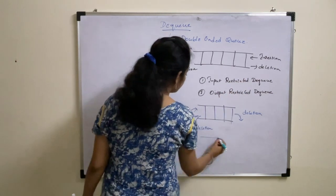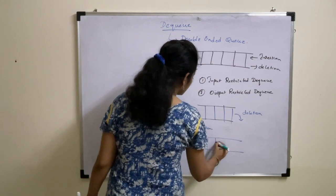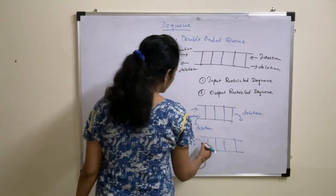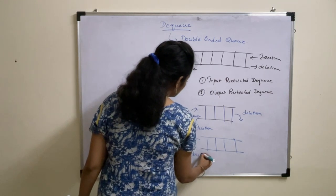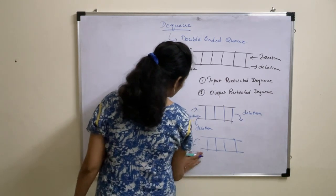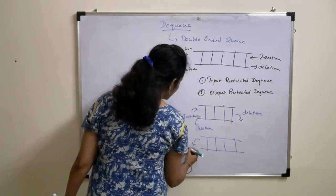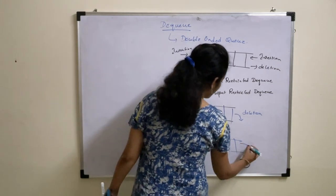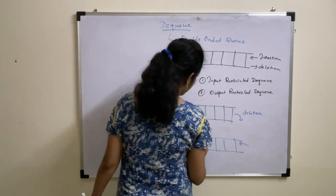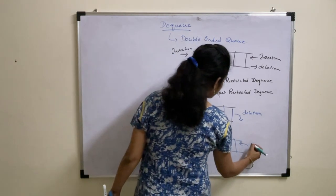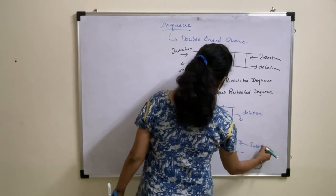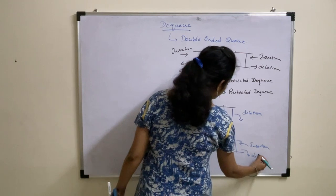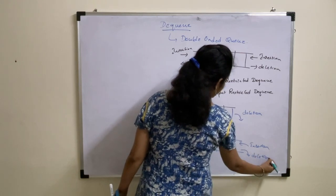Output restricted means the output is restricted. Insertion can be done from both ends, whereas deletion can be done only from one end. That is the difference between input restricted and output restricted DQs.